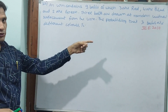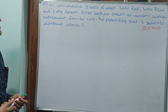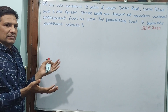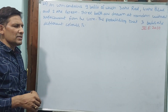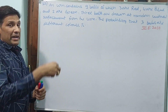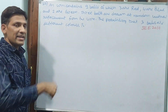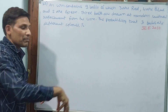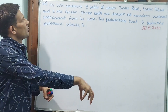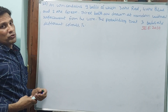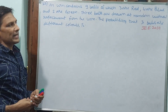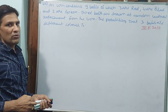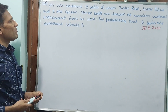Question number 22, a JEE 2010 question. An urn contains 9 balls: 3 are red, 4 are blue, and 2 are green. An urn is like a jar or box — you can put a hand in but cannot directly see everything inside. From 9 balls, 3 balls are drawn at random without replacement — one by one, taking 3 balls. Find the probability that the 3 balls are of different colors. First find the sample space N of S.